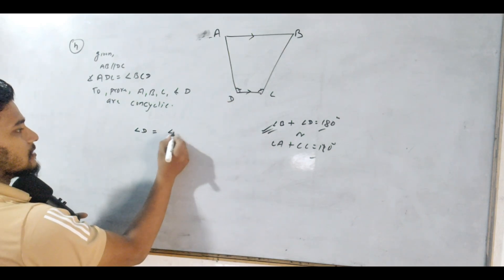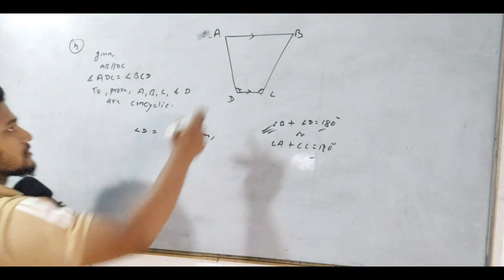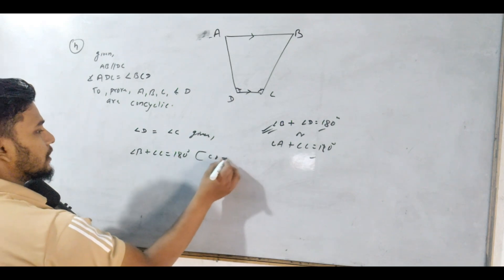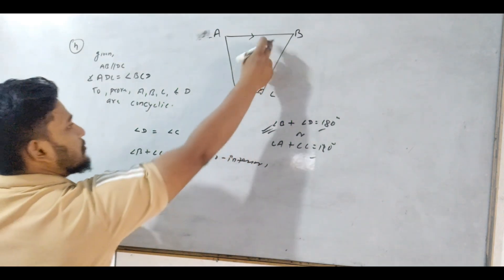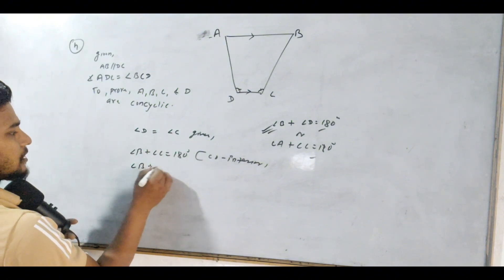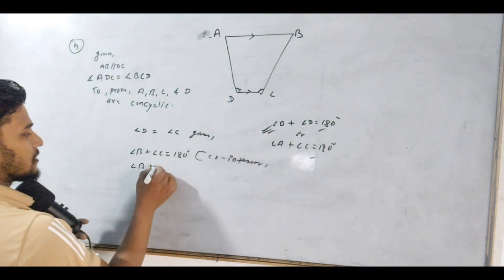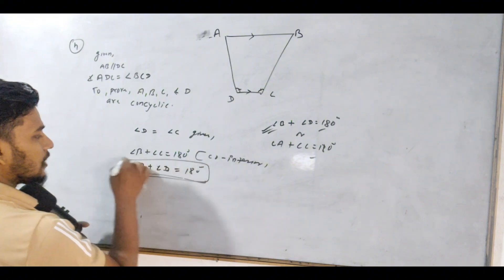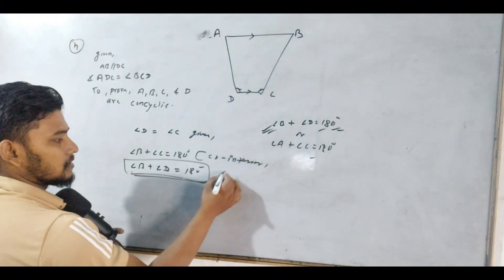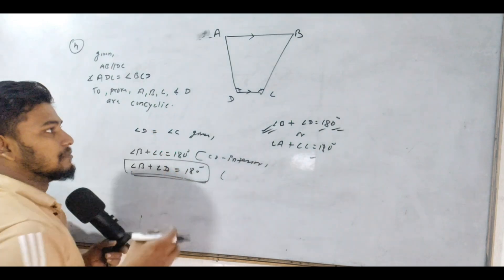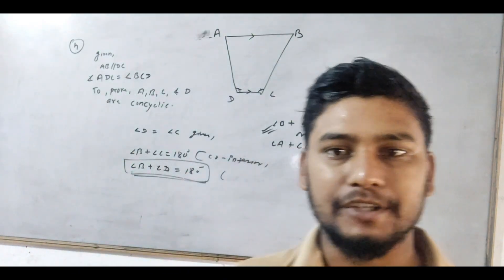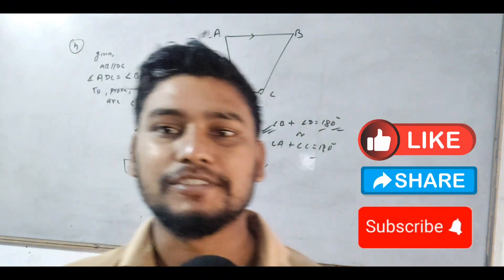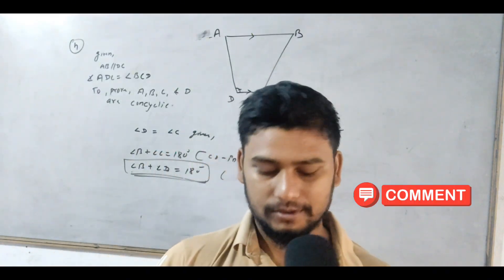Angle D is equal to angle C, equal to A. This is a parallel angle. Angle B plus angle C is equal to 180°. Angle B and angle C — angle B plus angle D is equal to 180°. Angle B is equal to D, so if you have a supplement to fill, then you have EBCD as a cyclic quadrilateral. If you have a statement, please pause the video. Please press like, subscribe and share the video.